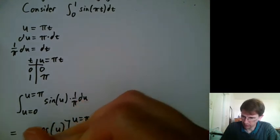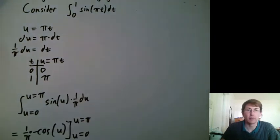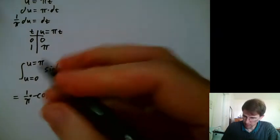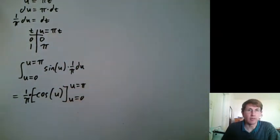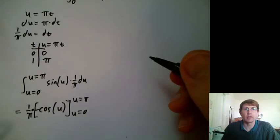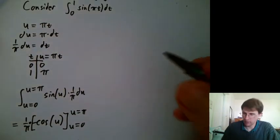Cosine of u from u equals 0 to u equals π. Oh, I forgot a 1 over π, so 1 over π times that. In fact, we could do that and then continue on. So that's the way we've been introduced to doing it.